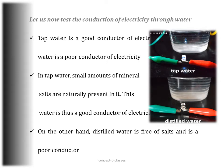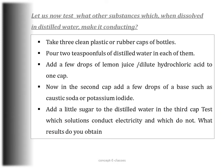The water we get from taps, hand pumps, wells, and ponds is not pure — it contains several dissolved salts and minerals. These salts provide sodium and chloride ions, and the flow of these ions results in the flow of electric current, making tap water a good conductor. Distilled water, on the other hand, is free of salts and is a poor conductor. Common salt dissolved in distilled water makes it a good conductor.